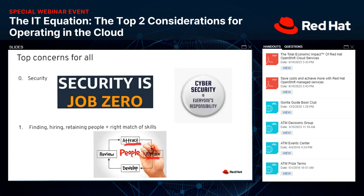The first one — what our friends at Amazon Web Services call 'job zero' — is security. Every company, no matter who you are, whether you're a supplier or consumer of technology, security really is everyone's responsibility. It's something that is pervasive here at Red Hat. Everything we do, we think about how security fits into the overall discussion. Things like DevSecOps, ShiftLeft, and looking at the secure supply chain are all top issues we'll discuss further.